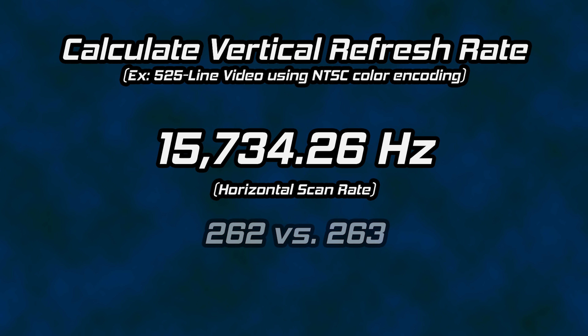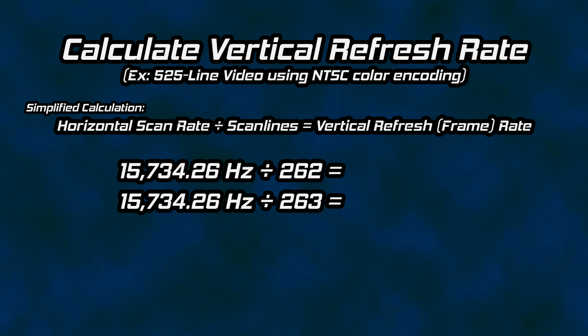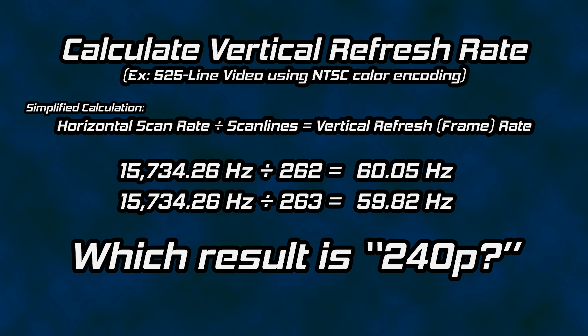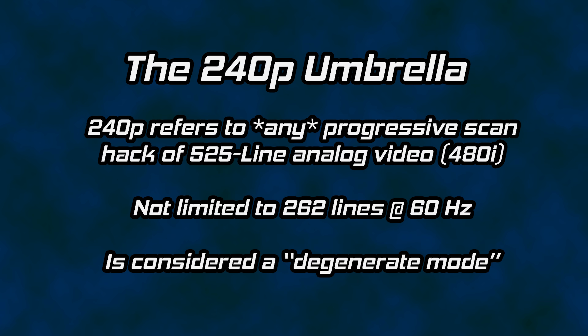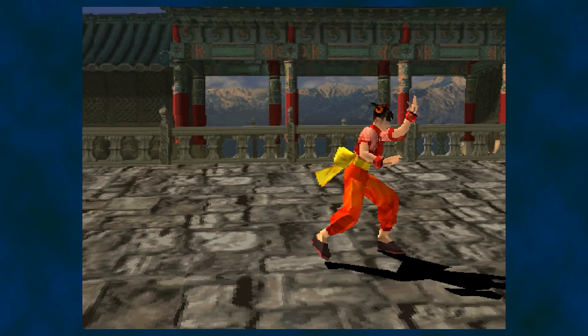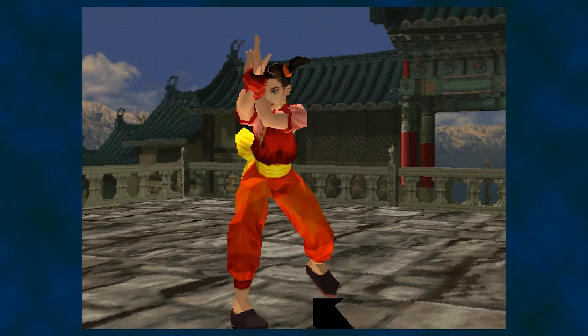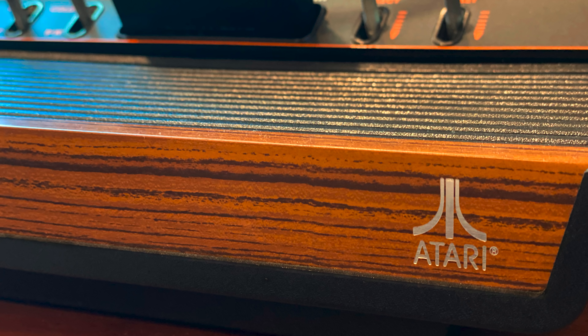Our field examples are 262 lines and 263 lines. Divide the horizontal scan rate by the number of lines in the field and you get a vertical refresh of 60.05Hz and 59.82Hz. To which of these two examples are we referring when we say 240p? Trick question — it could be either. 240p is an umbrella term we created in the modern era to encompass tweaking 525-line video to produce an image with progressive scan. Many consoles allow a programmer to select a graphics mode and the console handles the analog video output timing. The Atari 2600, however, puts vertical sync — when it occurs and for how long — in the hands of the programmer.